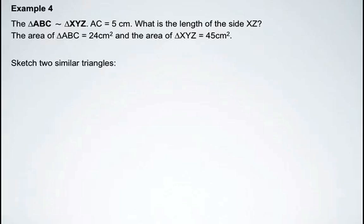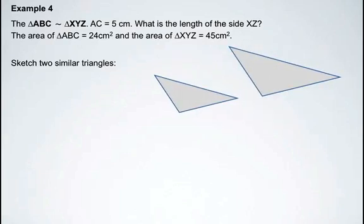The first step is to sketch the two similar triangles. Looking at the areas of these triangles, you should recognize that triangle ABC is the smaller of the two triangles. We've identified that area as being 24 centimeters squared and this one is 45 centimeters squared, and now we'll label each of the vertices of the triangles.